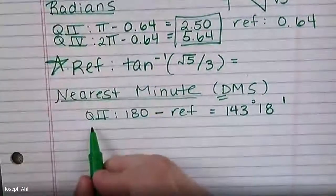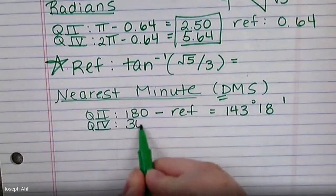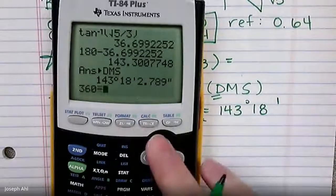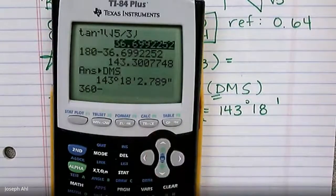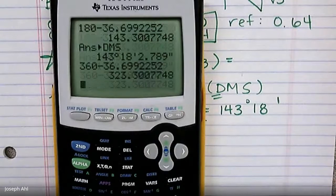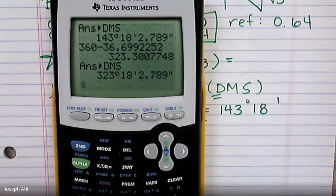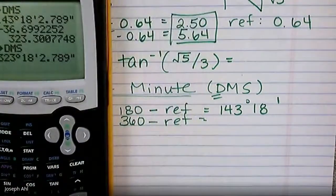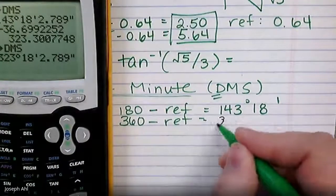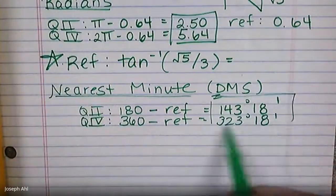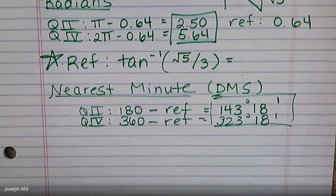As a reminder for quadrant four, the other quadrant we're in, it would be 360 minus the reference angle. So now if I do 360 minus this—remember, go back and get the 37 degree reference. There's my angle to convert to degrees, minute, seconds. Second apps, choice four. This is 323 degrees and 18 minutes. So it takes a little while to get a solid understanding and the hang of typing things into the calculator, but these would be the other two answers if we said to the nearest minute.